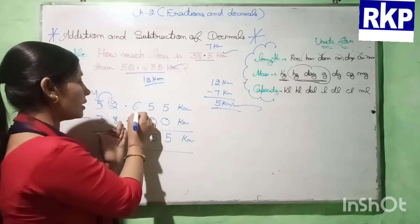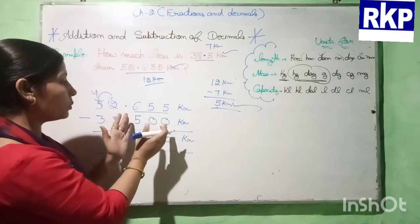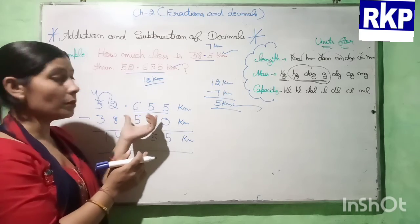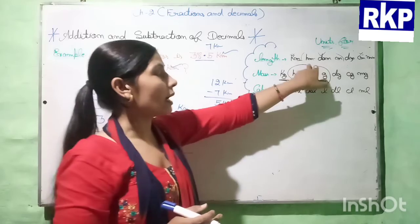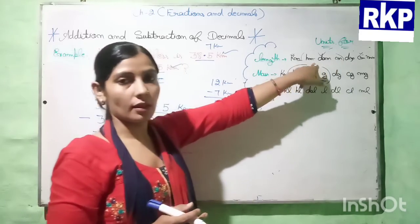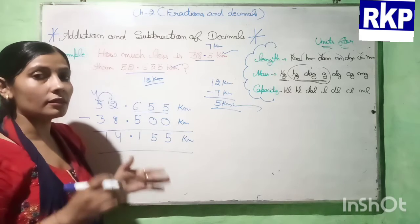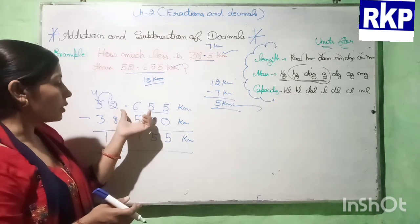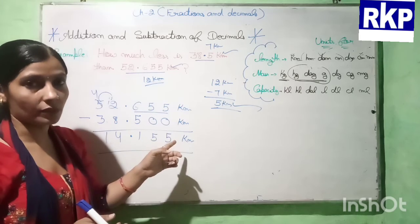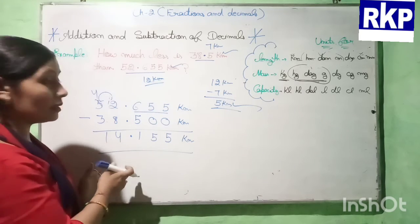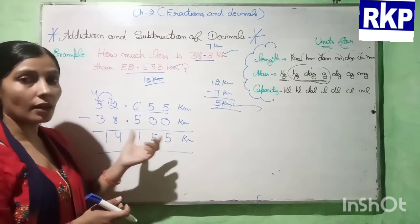You can also note that after the kilometer, in that column there should be 3 digits to show the meters, because from kilometer to meter we have 3 units. So here 1, 2, 3 digits and here also 1, 2, 3 digits. Like this we can find the answer. So 14.155 kilometers is the answer.